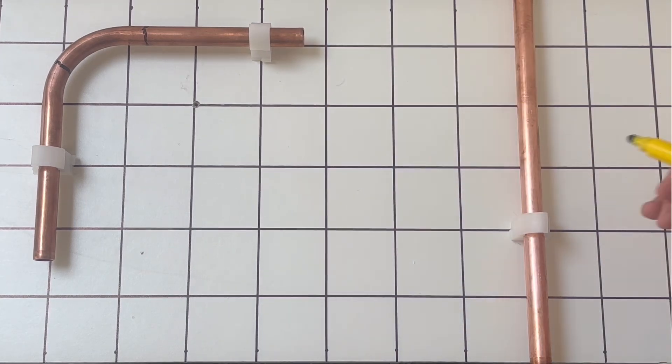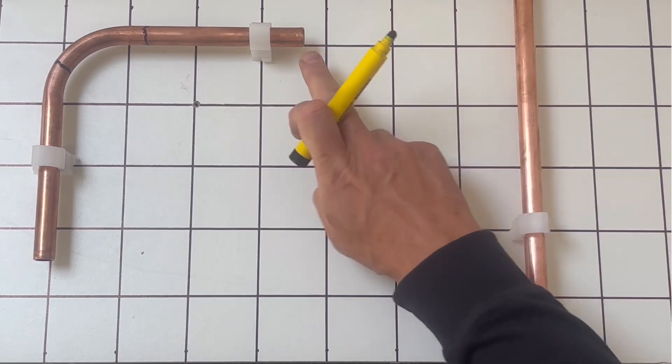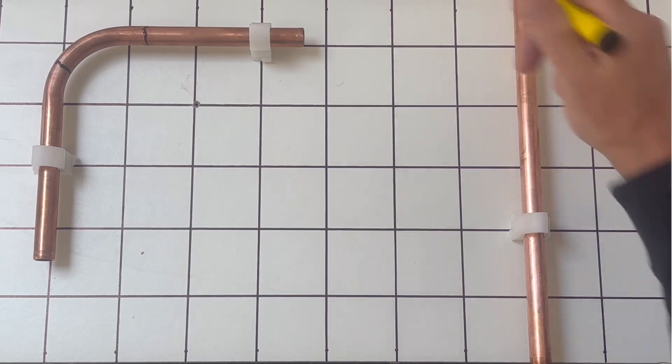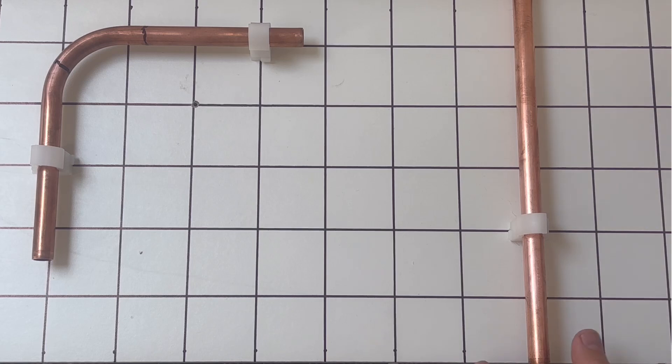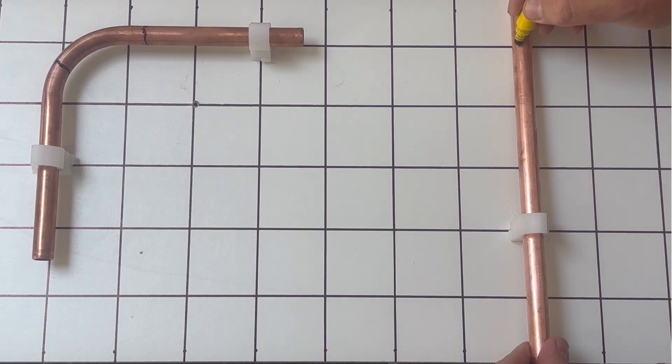So what we do is we need to mark the center from that pipe and mark it on this pipe here. So we're going to use the line on the graph board and then we're going to put the mark in there guys like that.